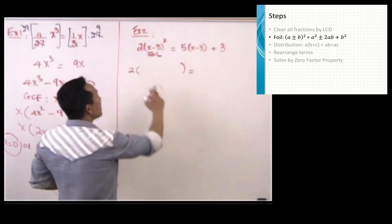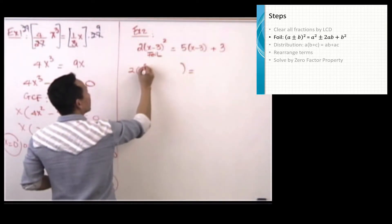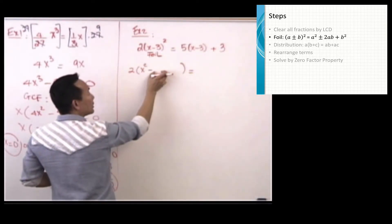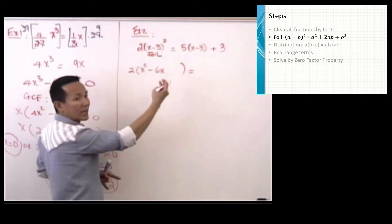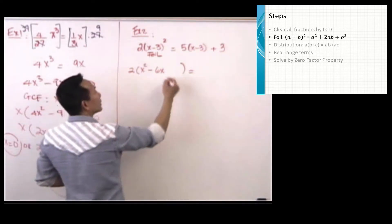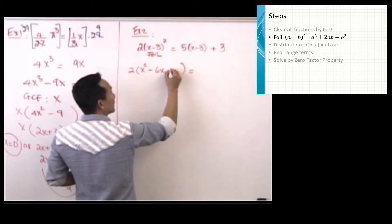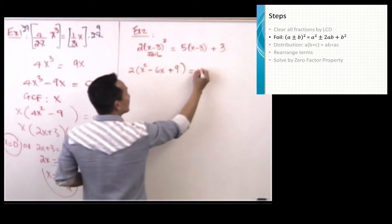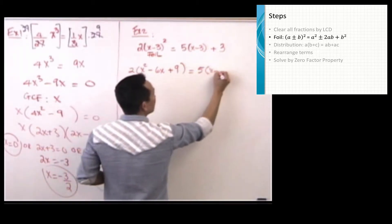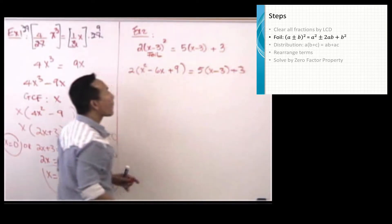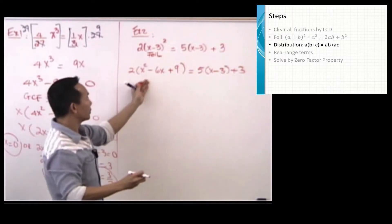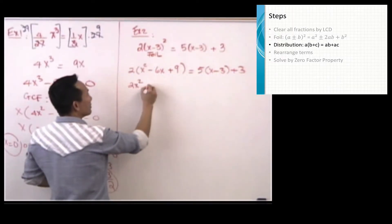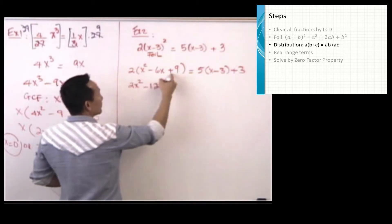Working it out: my first term is x squared, my middle term is negative 6x (x times 3 plus 3x times 2 equals 6x), and negative 3 to the second power is 9. So we have x squared minus 6x plus 9 equals 5 times the quantity x minus 3, plus 3. After FOILing I distribute the 2 in: I have 2x squared minus 12x plus 18.